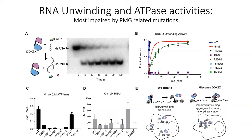Can we use that knowledge to better understand which DDX3X mutations are more severe or more mild? In this assay, the dark bands refer to where the RNA is. The double-stranded RNA starts out here at time zero — at the very beginning of this assay. By 120 seconds, all of the RNA is unraveled and none of the double-stranded RNA remains. That's how it works in a normal DDX3X protein — it can unravel the RNA very quickly.